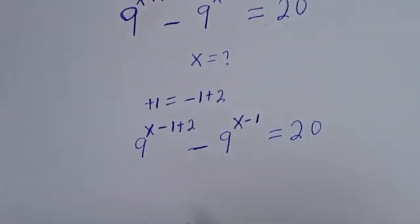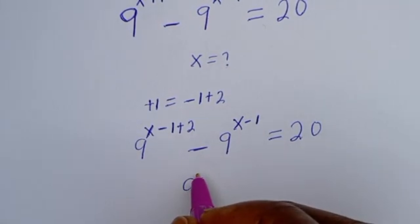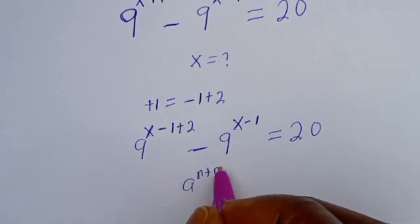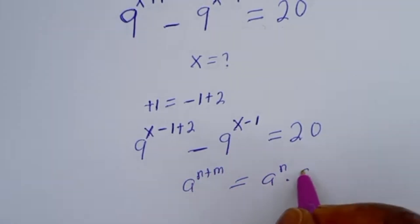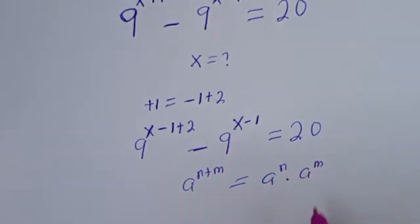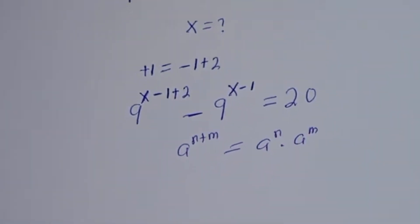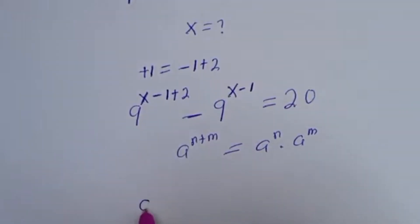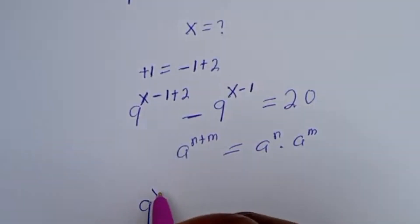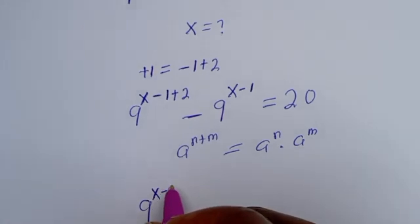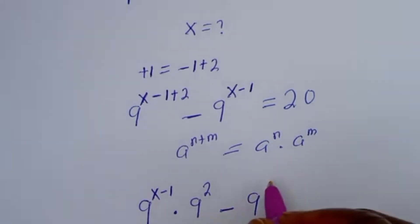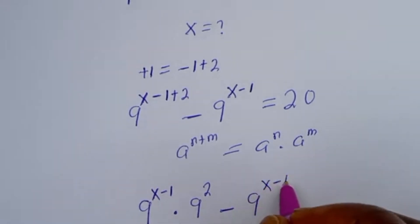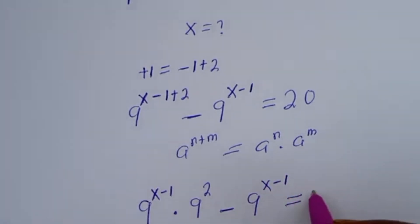Take note that if you have a to the power of n plus m, this is equal to a to the power of n multiplied by a to the power of m. Then this can be written as 9 to the power of x minus 1, multiplied by 9 squared, minus 9 to the power of x minus 1, is equal to 20.